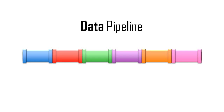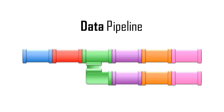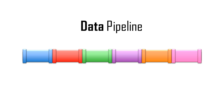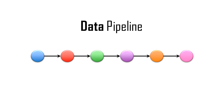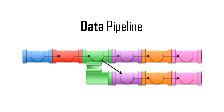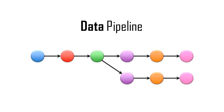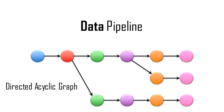Thus far I've only visualized data pipelines as simple linear flows, but they can be more complex using branching logic. Instead of representing each section of a pipeline with a pipe, we can use a vertex and an edge to create a graph. Structures like these are called directed acyclic graphs — the edges flow in one direction and the graph doesn't contain any cycles, so it's acyclic.